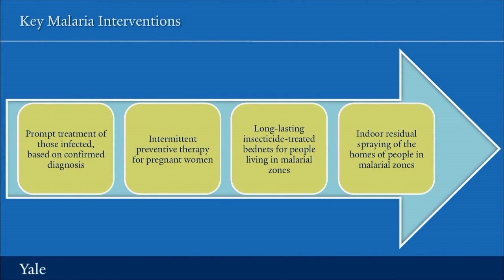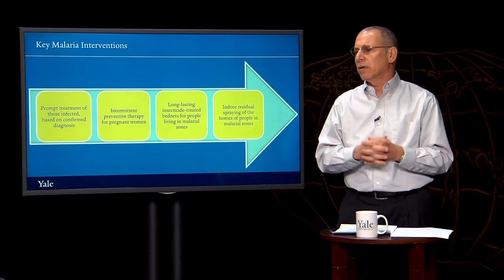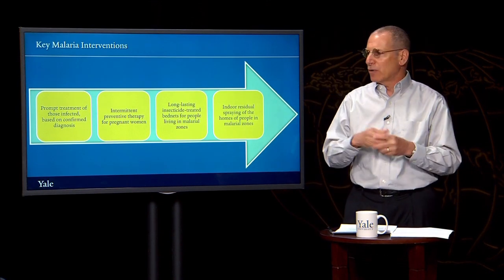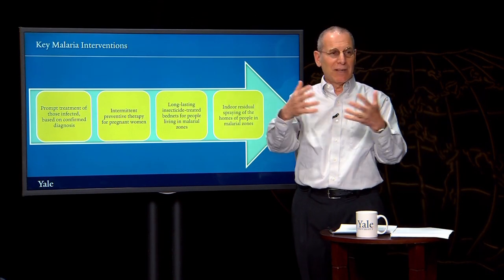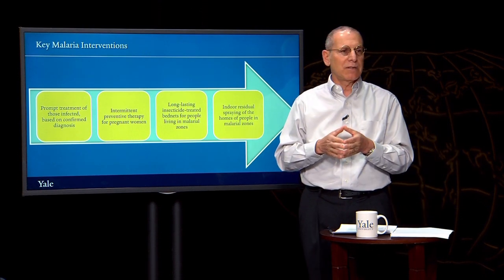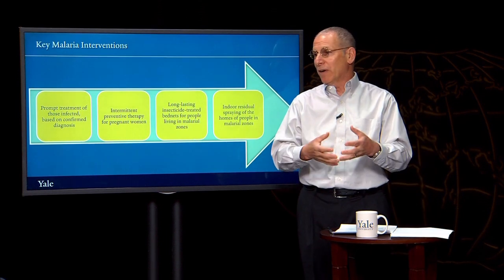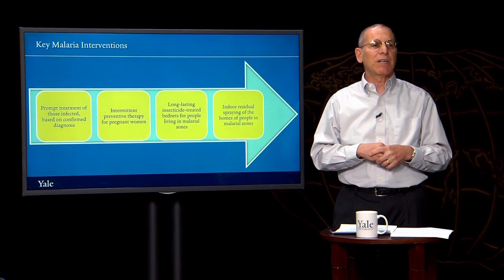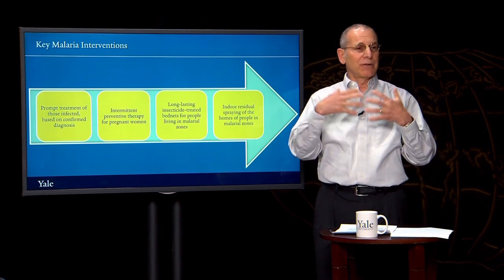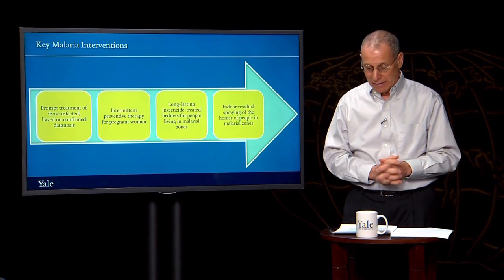It's also very important that where possible, measures be taken environmentally to try to reduce the number of mosquitoes breeding in the area where you live. This is easier in urban settings where you can remove tires or flower pots in which water might collect. It's much more difficult in places where it rains a lot and where mosquitoes are ubiquitous.